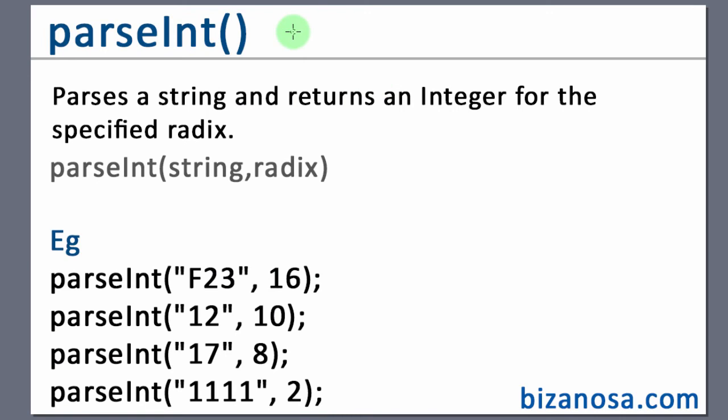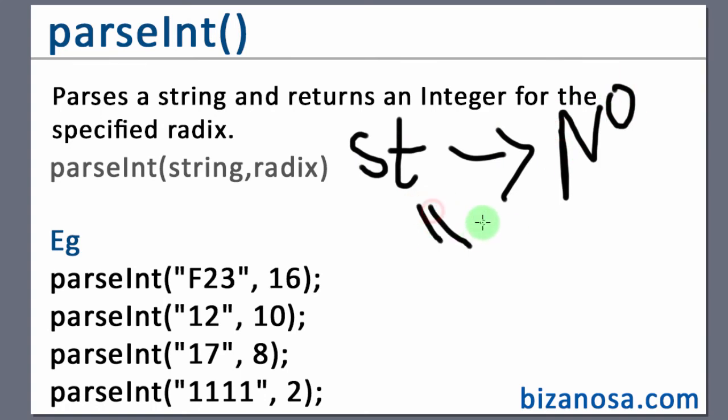In the last video we started looking at how you can convert a string to a number. If you have something like this being held in memory, this is a string but you want to convert it so that you can use it as a number.